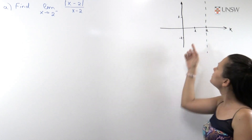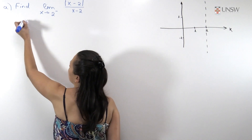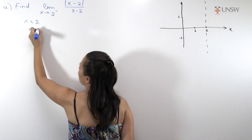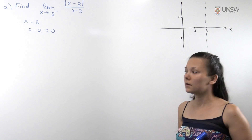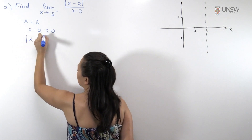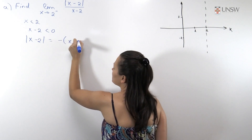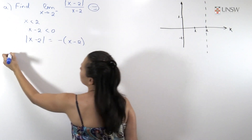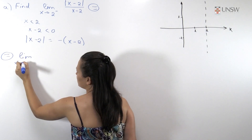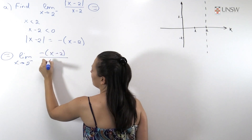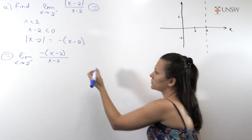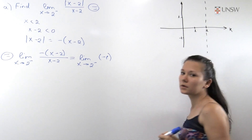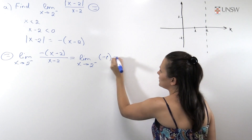We are approaching the point 2 from the left, and therefore we are dealing only with x values which are strictly less than 2. For such points, x-2 is strictly less than 0, and therefore the absolute value of x-2 equals minus (x-2). Substituting this, we get the limit as x goes to 2 from the left of minus (x-2) over (x-2). The (x-2) cancels, giving us the limit of minus 1, which is just minus 1.